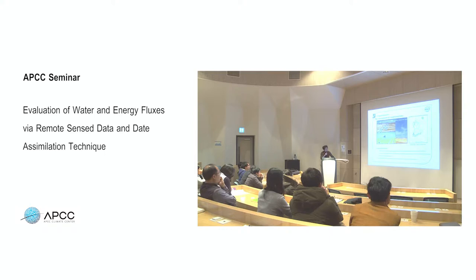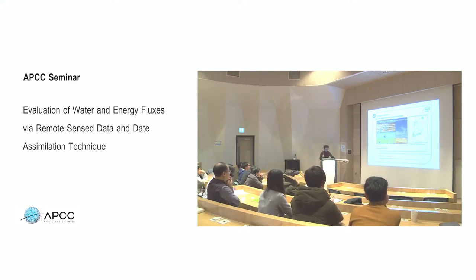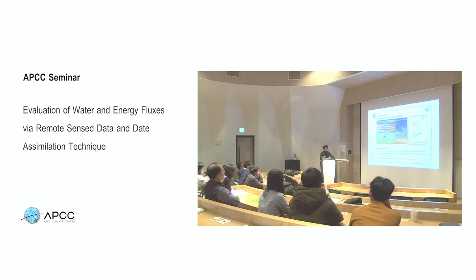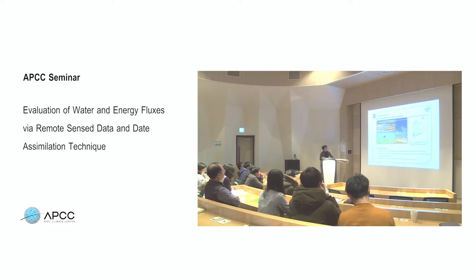We provided a brief description of AMSR-E and ASCAT as passive and active sensors for spatial mapping of surface soil moisture conditions, showing 5-centimeter depth values. Next, we move to evapotranspiration.